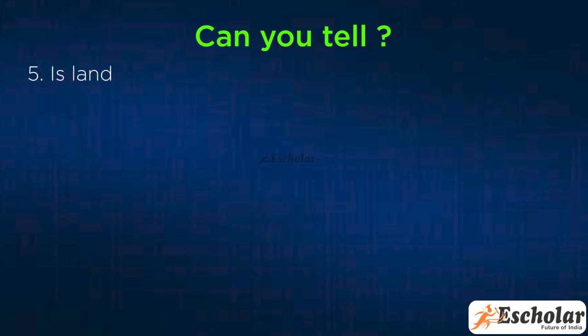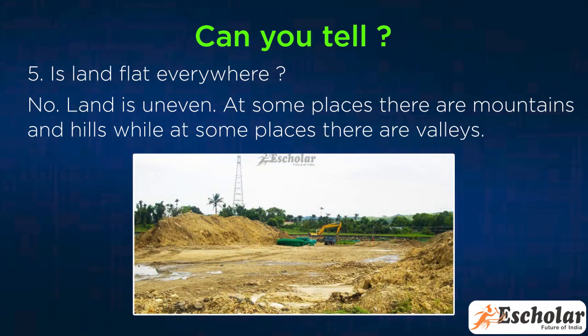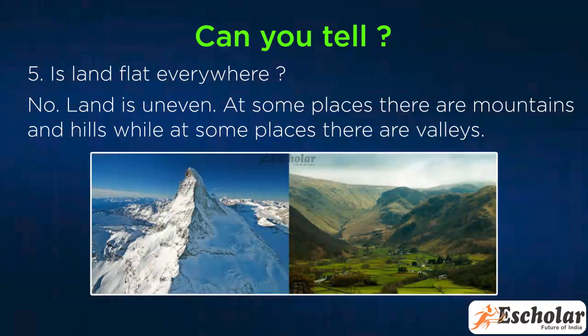Fifth, is land flat everywhere? No, land is uneven. At some places, there are mountains and hills, while at some places, there are valleys.